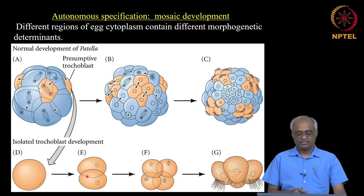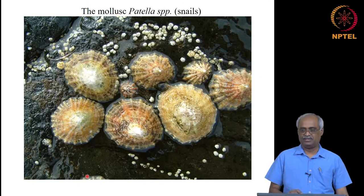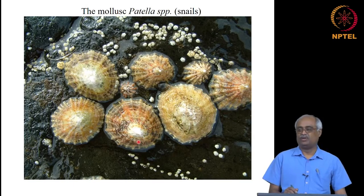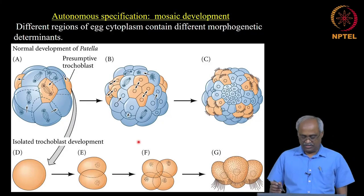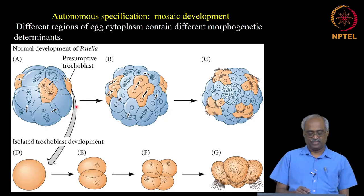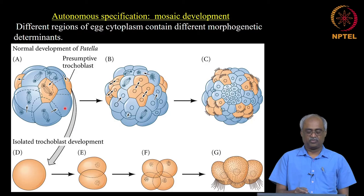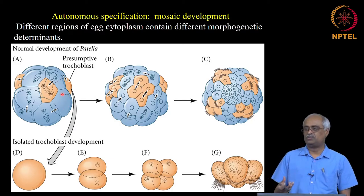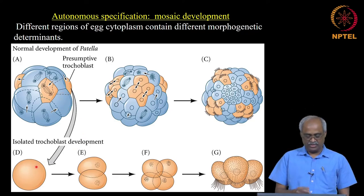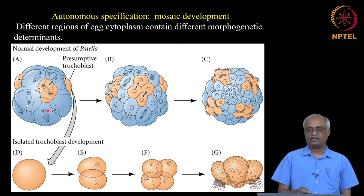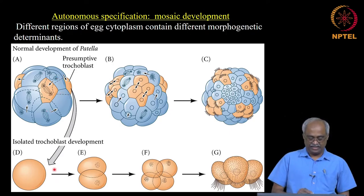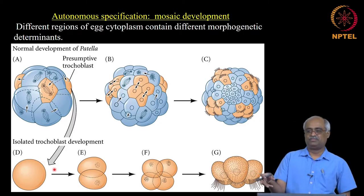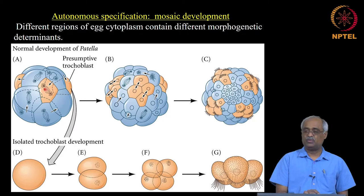Going back in history: the organisms here are mollusks (Patella). In these mollusks, we look at how specification happens during embryonic development. If you isolate individual cells by putting embryos in calcium-free water and shaking, the cells loosen up. These cells have different pigments useful for distinguishing them, and each cell makes the part of the embryo it was destined to make — that same structure forms even when isolated.